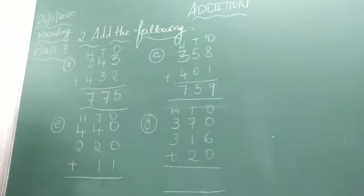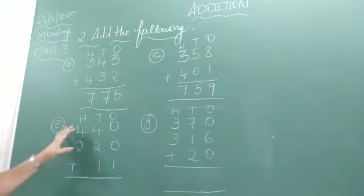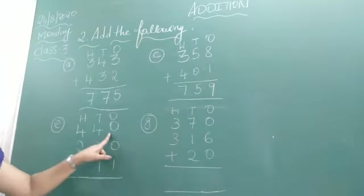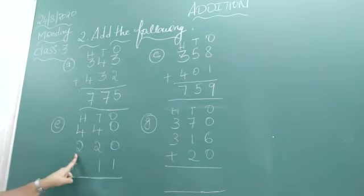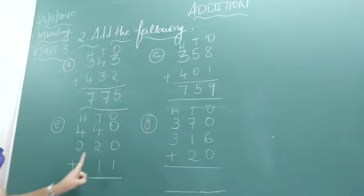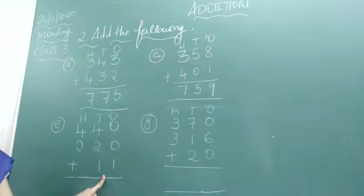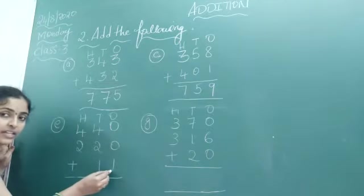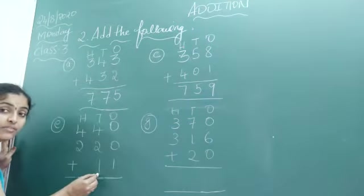Now look at the next problem which is adding 3 numbers. 440, 220 plus 11. Three numbers I need to add. We have 11, up to tens place. We don't have hundreds place.